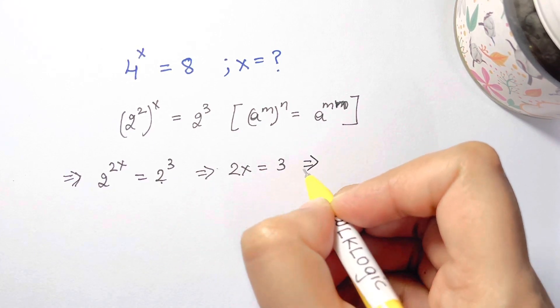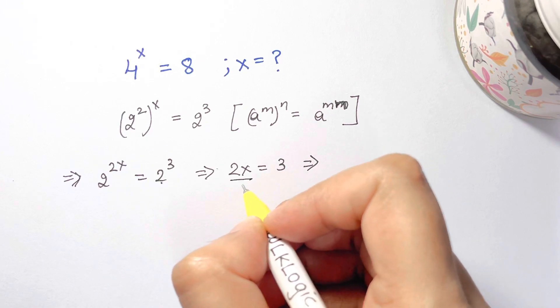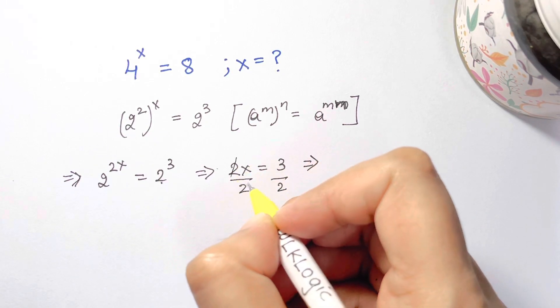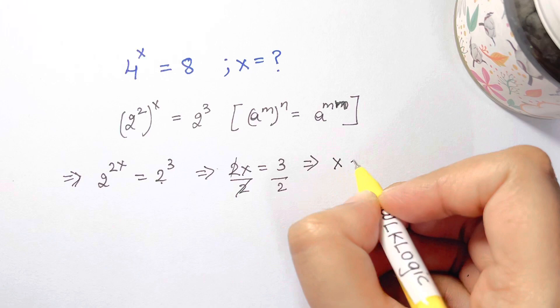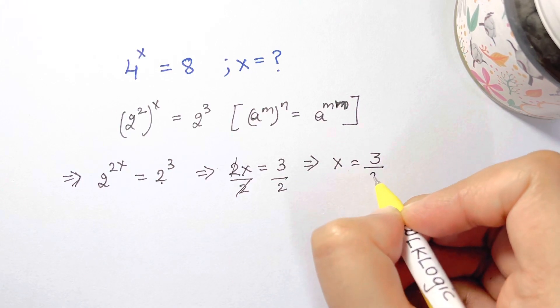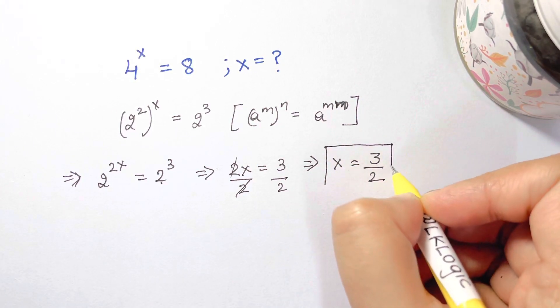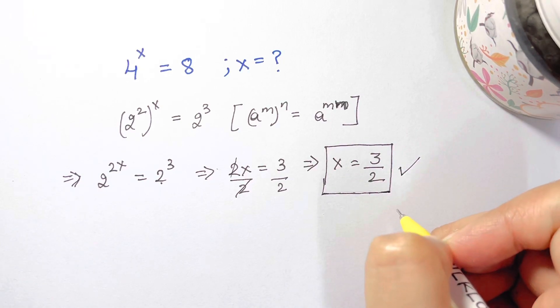From here, what is x equal to? Divide both sides by 2, so this 2 gets canceled. x equals 3 over 2. This is how we have found it easily using the exponential laws.